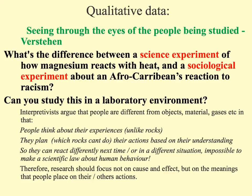The other type of data that can be collected is qualitative data. The key thing to consider is that it should achieve something known as Verstehen, which is one of the concepts I asked you to look up earlier. Verstehen is a term coined by the sociologist Weber, and he's a social action sociologist. It basically means seeing through the eyes of the people being studied — for me, Verstehen always means trying to develop empathy with your subjects.